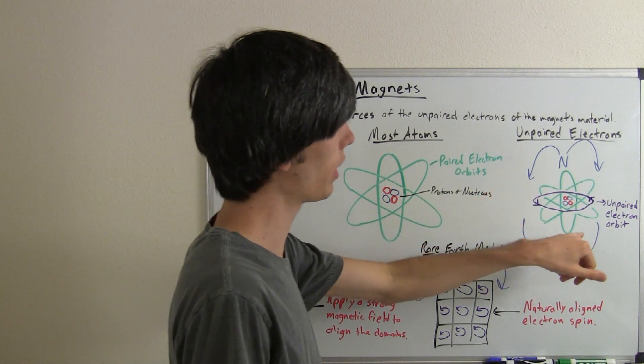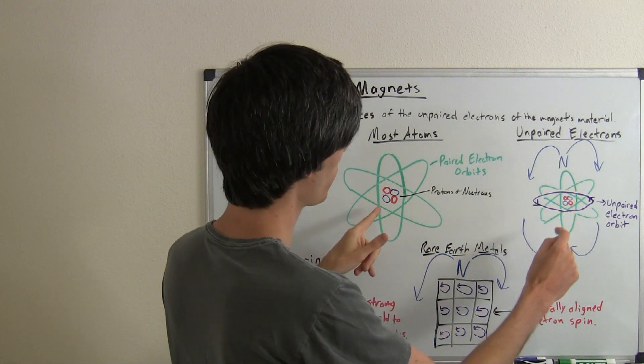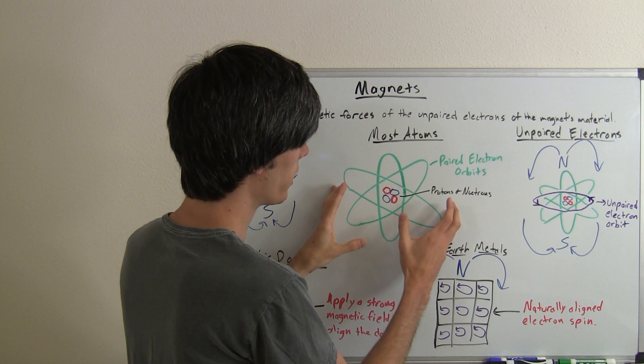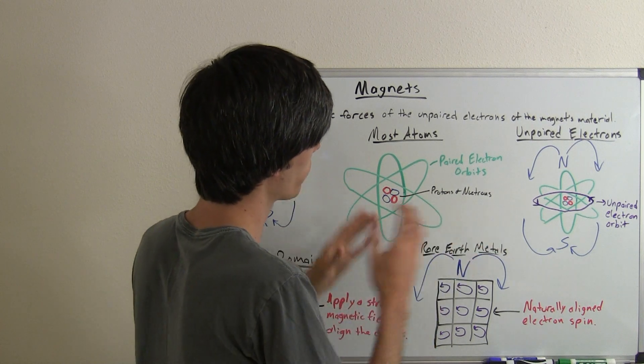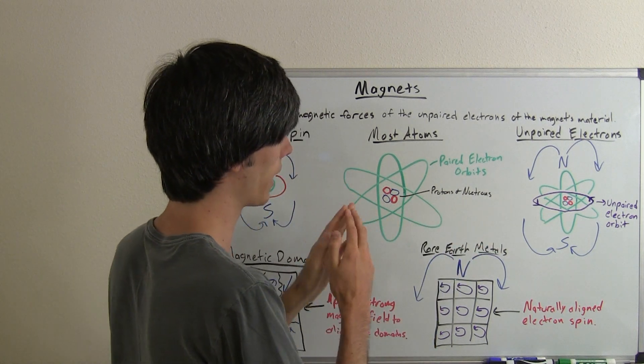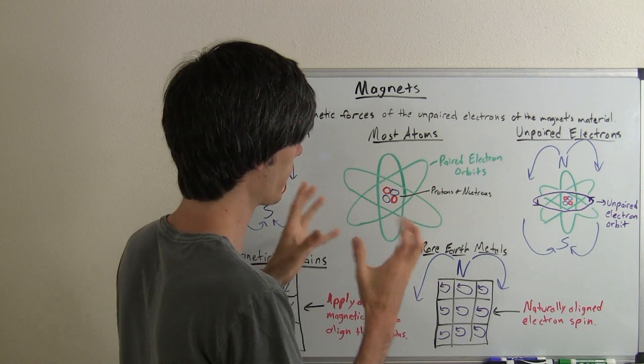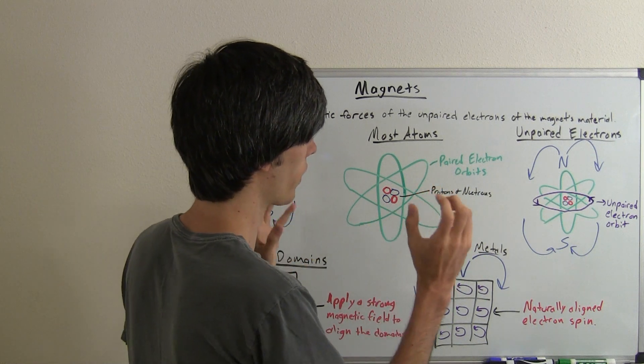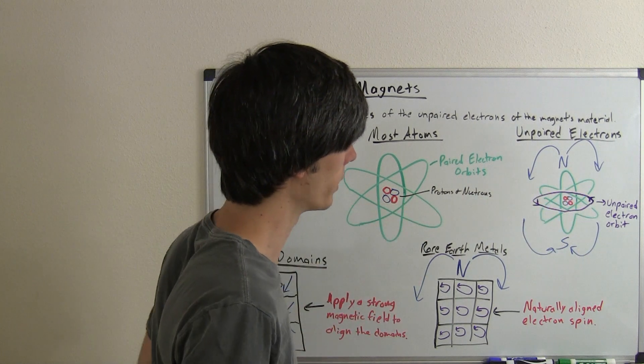But if you have a single unpaired electron within that same atom, so you've got this same element here except, well different element, and this element doesn't have an even number of electrons and in fact one of those electrons is out on its own orbit.